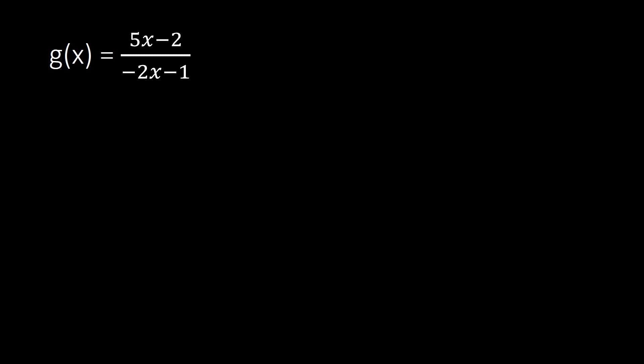Let's go to the next example, which has the same format. We have g(x) equal to 5x minus 2 over negative 2x minus 1. You may pause the video and try it on your own. Using the shortcut, g inverse of x equals: we retain x minus 2 on the numerator and negative 2x on the denominator.